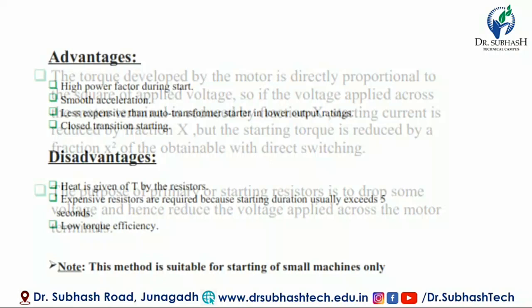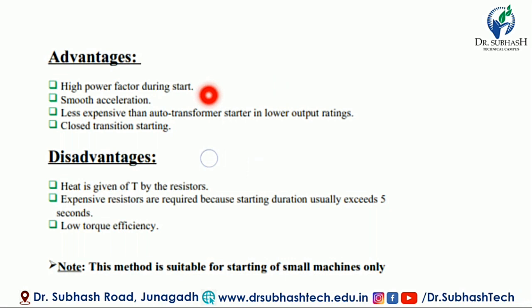The purpose of the primary or starting resistor is to drop some voltage. Hence, a reduced voltage is applied across the motor terminals. One advantage is a comparatively high power factor during starting.